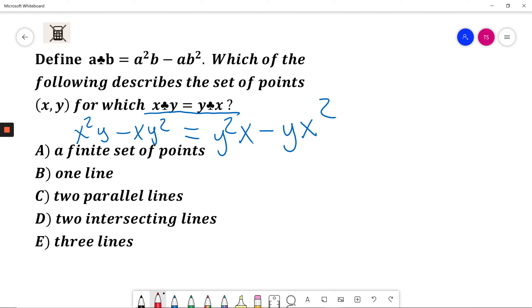I will move everything to the left side by subtracting y²x and adding yx² to both sides. This gives 2x²y - 2xy² = 0.